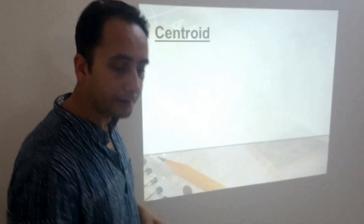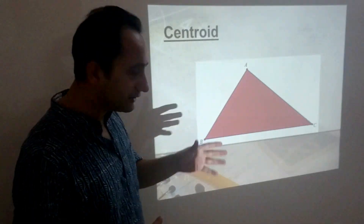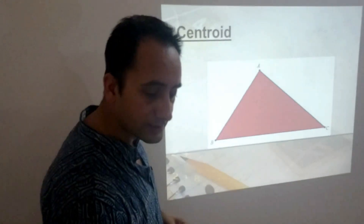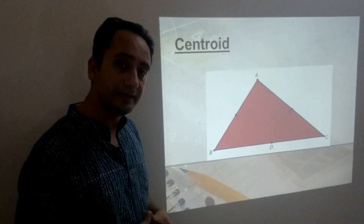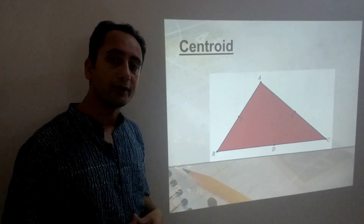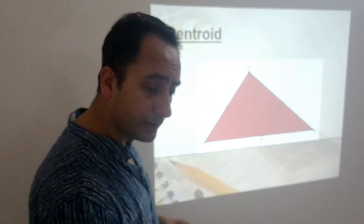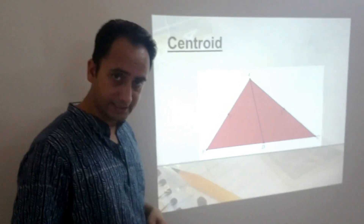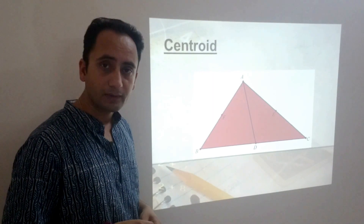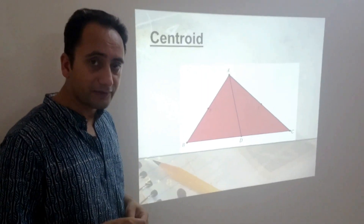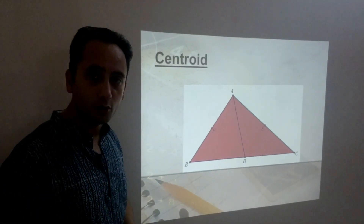First of all, Centroid. Let us suppose triangle ABC is given to us. Let's take the midpoint of each side of this triangle — D is the midpoint of BC. Similarly, E and F are the midpoints of the rest of the two sides. If I join a midpoint with the opposite vertex, this line segment is known as a median. So what is a median?